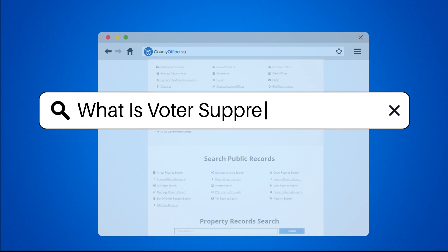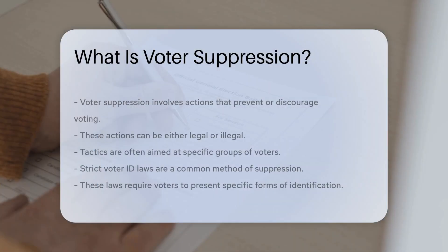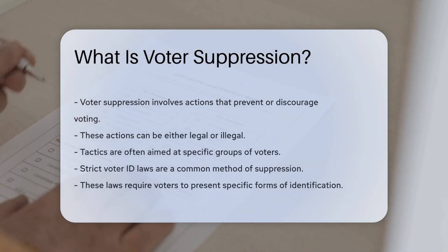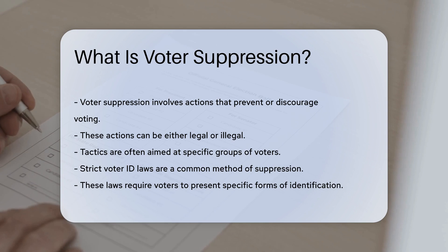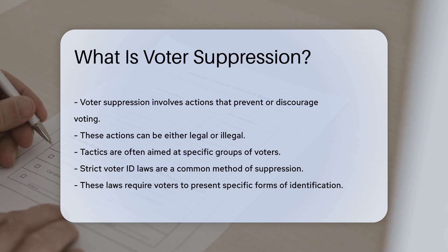What is voter suppression? Voter suppression refers to actions that prevent or discourage people from voting. These actions can be legal or illegal, and they are often aimed at specific groups of voters.